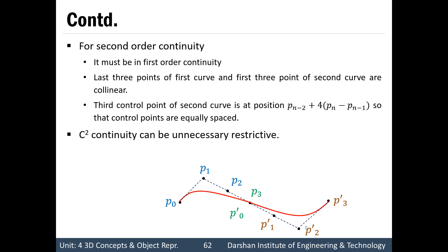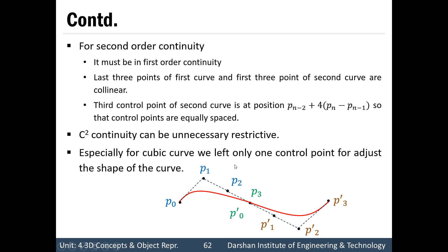C2 continuity can be unnecessarily restrictive, especially for a cubic curve. For a cubic curve the degree is 3, so there must be 4 control points. Out of these 4 control points, 3 are placed in collinear positions with restricted spacing for C2 continuity. This leaves only one control point free for changing the shape of the curve, which is unnecessarily restrictive.